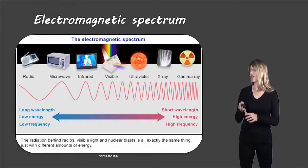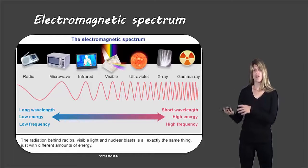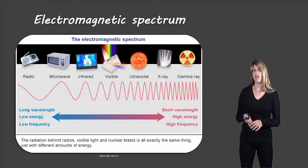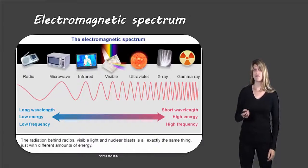So there's long wavelength, low energy, low frequency on the radio waves end. And short wavelength, high energy and high frequency on the other end of the spectrum.